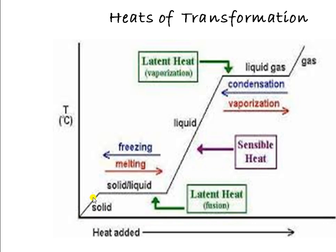This diagram shows the different phases along with different processes. Solid gets converted into liquid; this period is called latent heat. For this particular period, the substance starts to melt or freeze. This period is known as the latent heat of fusion. Then the solid gets converted into liquid.